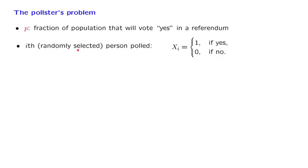When we say that the people are randomly selected, what we mean is that we choose them uniformly from the population. And since there's a fraction p that will vote yes, this means that this random variable will be 1 with probability p. And therefore, the expected value of Xi is equal to p.